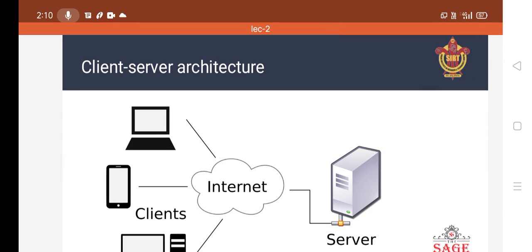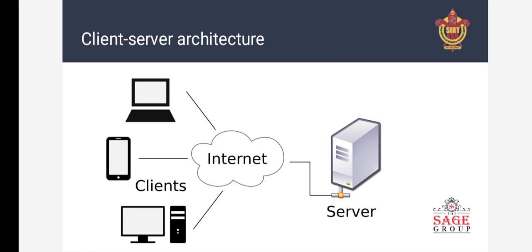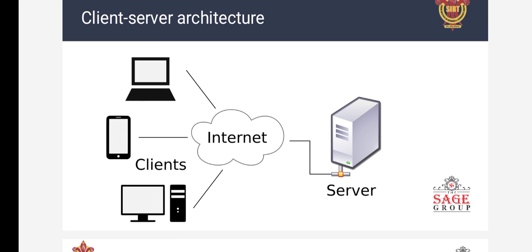This is the diagram for Client-Server Architecture. We can see two systems and one mobile phone connected through the internet to the server. Suppose we want to access any information from the server — we just connect through the internet to the server. All the information is stored in the server and we can easily access it. There are many services provided by the internet like file transfer, mailing, directory services, and database storage.